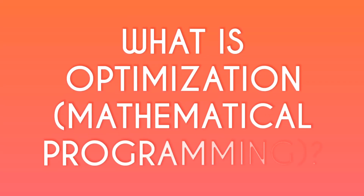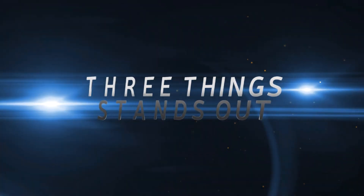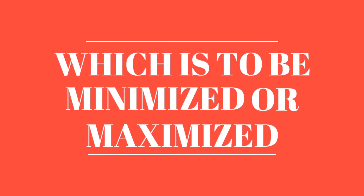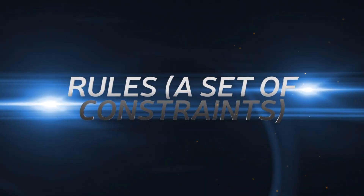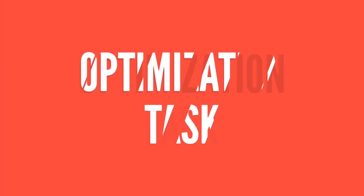What is optimization? According to Wikipedia, optimization is the process of making the best selection from a given set of options based on some rules. Three things stand out in this definition. One, the best selection, also known as the objective function, which is to be minimized or maximized. Two, options or collections of variables. Three, rules or a set of constraints.